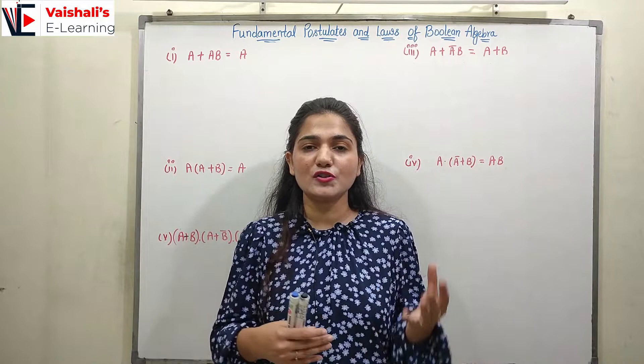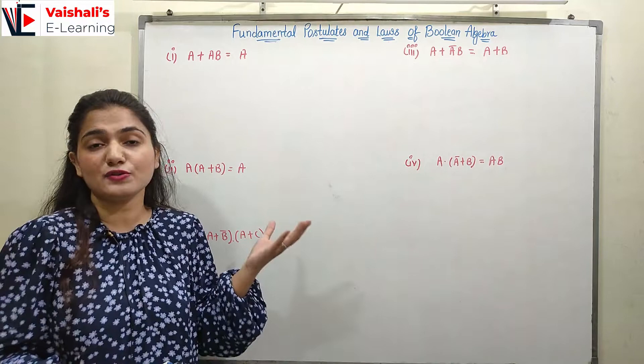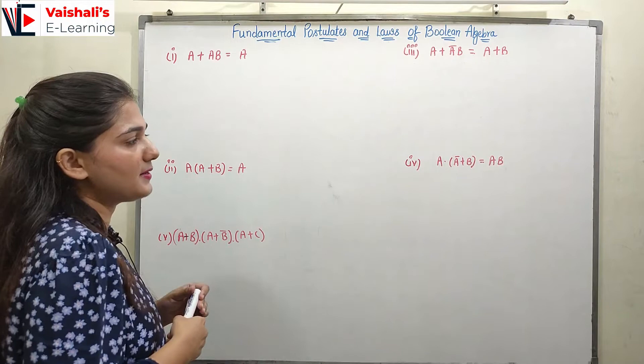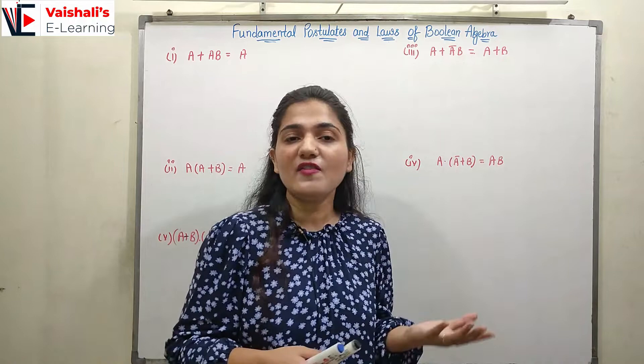We have some theorems from the last class which I said I would show in the next class. We have: a + ab = a, a + āb = a + b, a·(a + b) = a, and a·(ā + b) = ab. These four expressions were discussed in the last class but we did not verify them. Now we will verify them and see how we can simplify them using Boolean expressions.